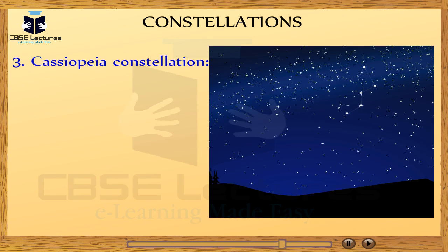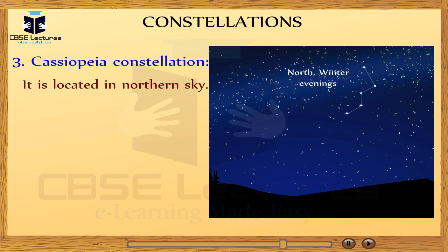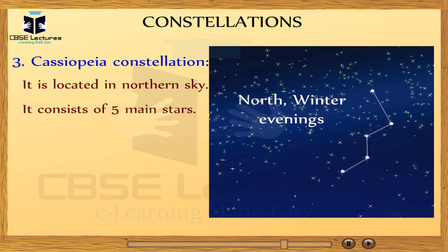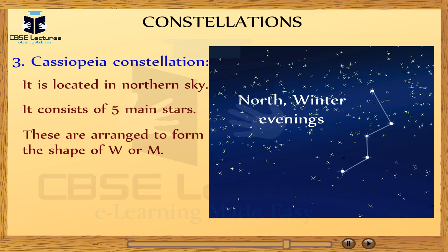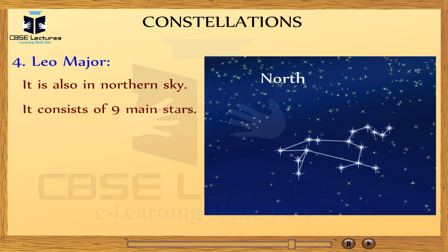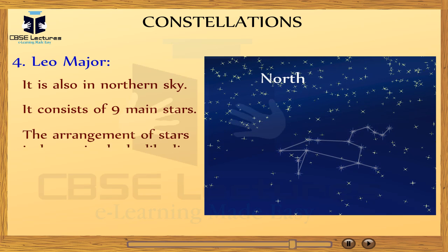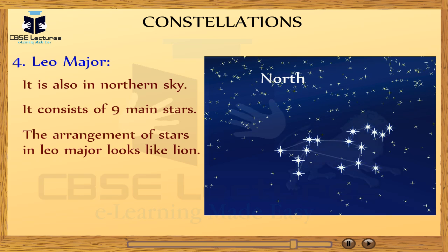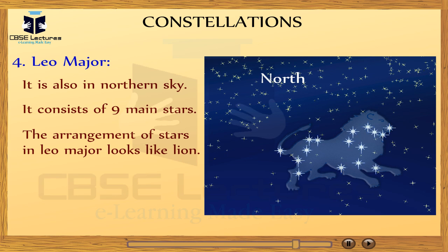Next is the Cassiopeia constellation, located in the northern sky. It consists of five main stars arranged to form the shape of W or M. It is visible during winter in the early part of the night. Fourth is Leo Major, also in the northern sky. It consists of nine main stars, and the arrangement mainly looks like a lion. It is visible during summer in the early part of the night.